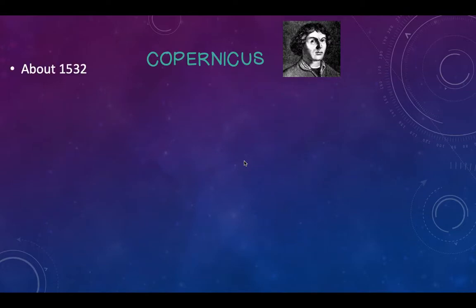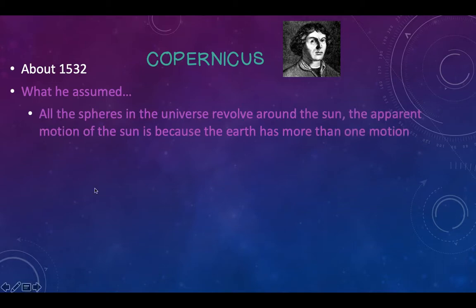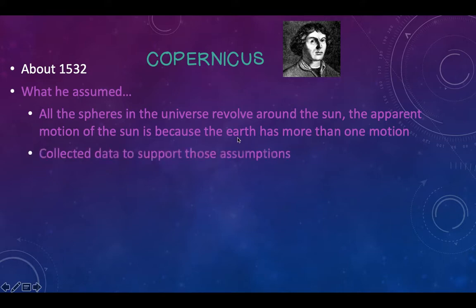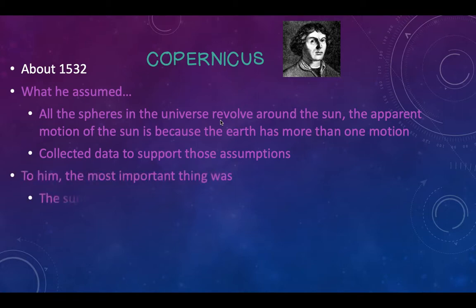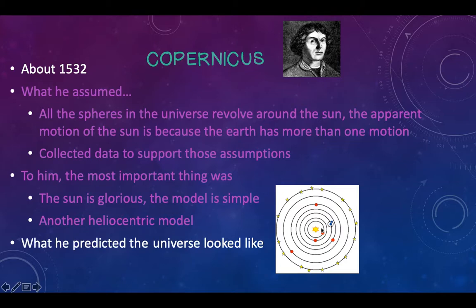Next, we're going to talk about Copernicus. Now we're into AD time — 1532. He assumed that all the spheres in the universe go around the sun, and that the apparent motion of the sun is because the earth has more than one motion. To him, the most important thing is that the sun is glorious and the model should be simple. So we have another heliocentric model — sun at the center, with the earth moving around it in different ways, which would explain why sometimes it looks like the sun is moving.